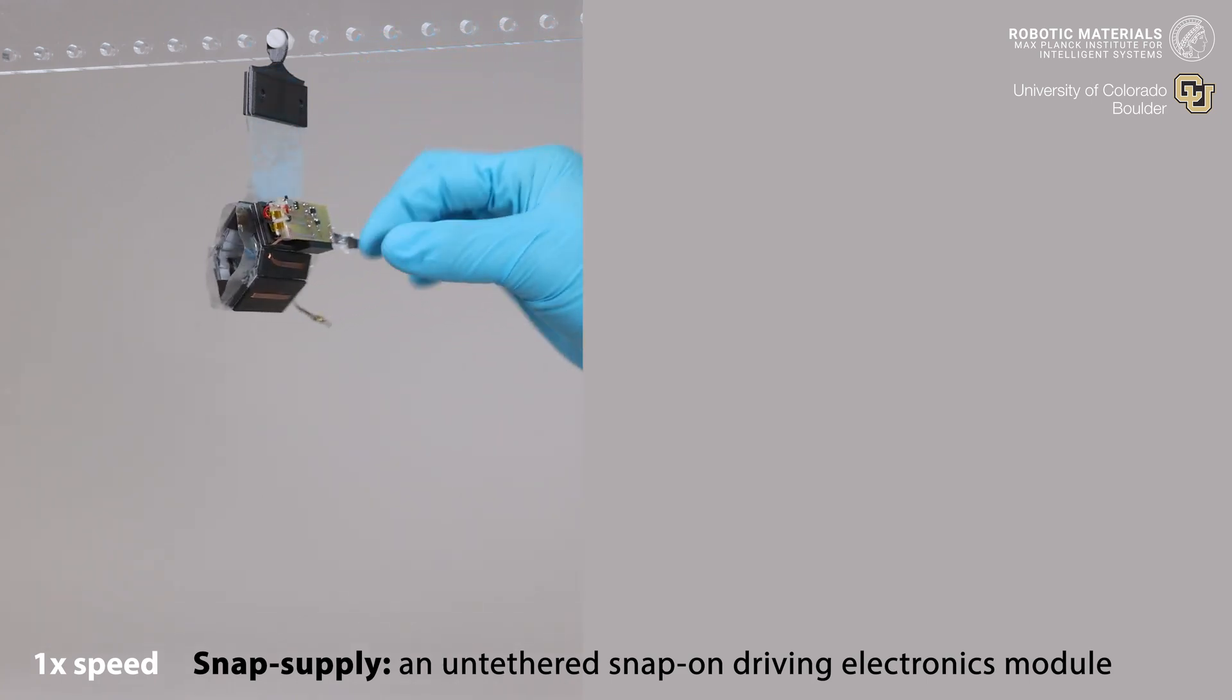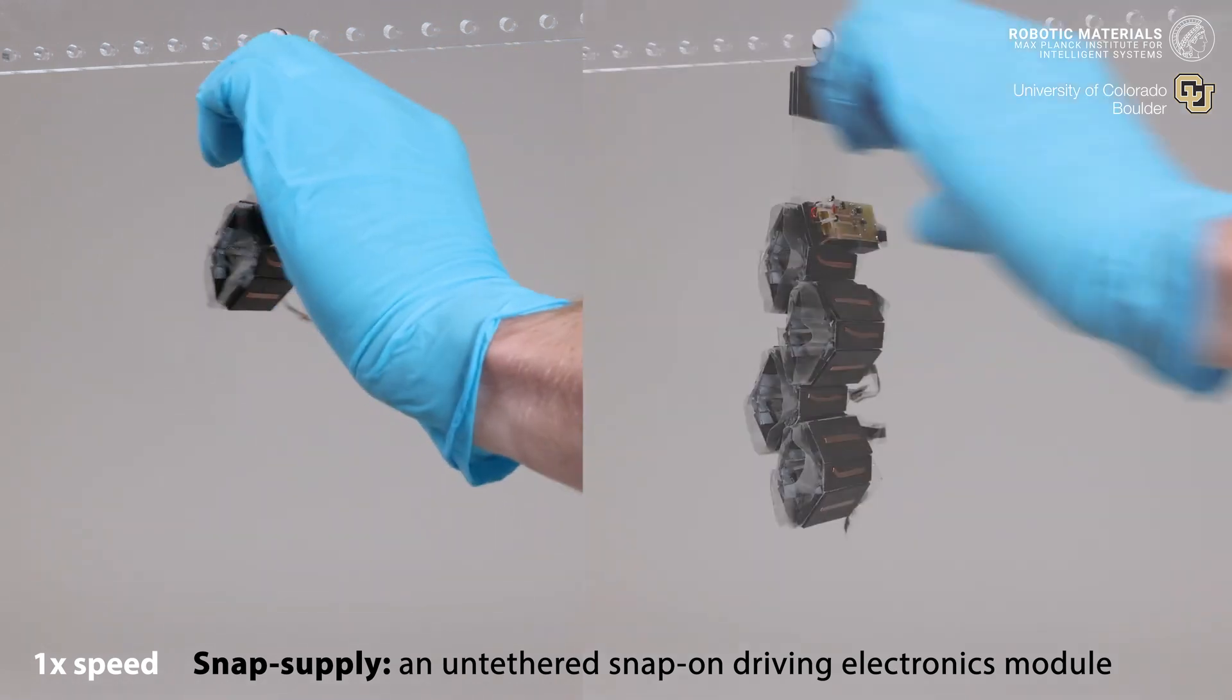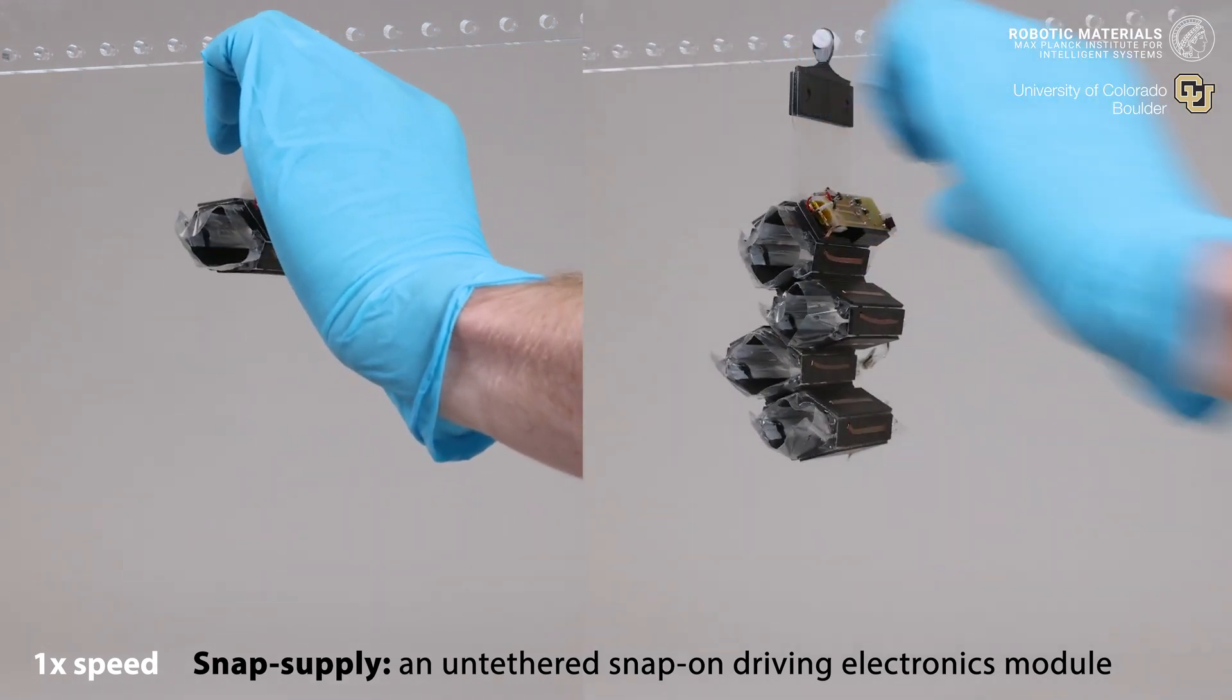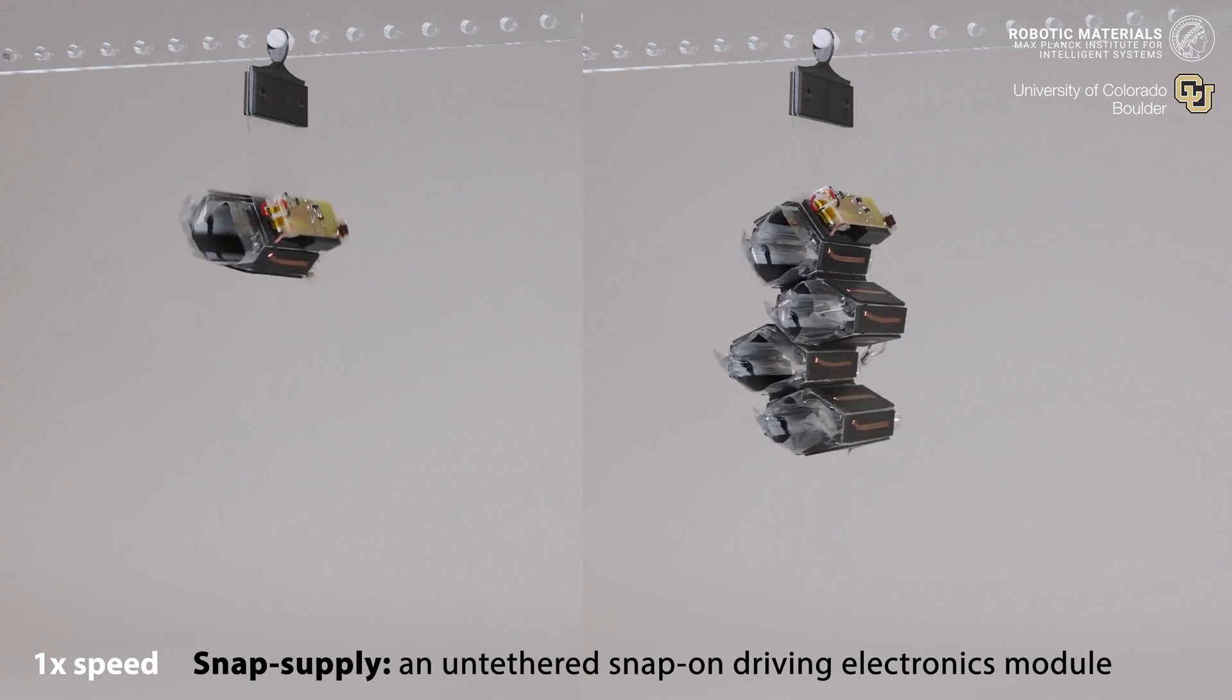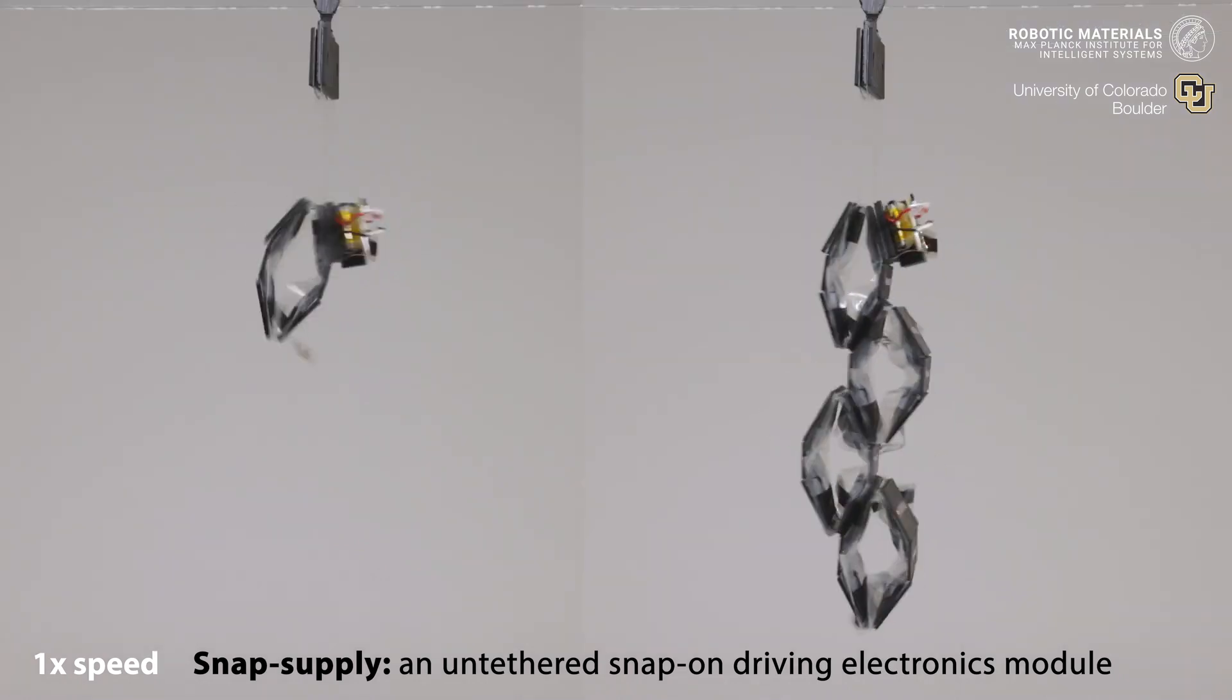Lastly, we designed a fully untethered snap-on driving electronics module called Snap Supply, which can power the motion of a single HEXEL for up to 40 minutes. We can power multiple modules this way to create fully untethered robotic systems.